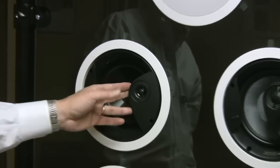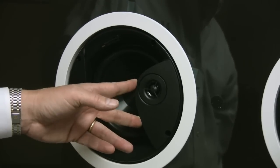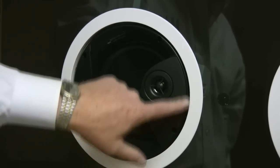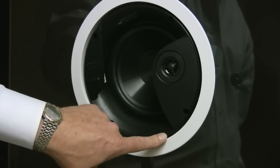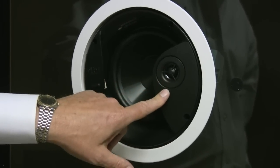By moving it off-axis, we get what we call asymmetrical diffraction, where the diffractive surface is not the same on both sides. And by doing that, you minimize the amount of sound that comes back and mixes with the tweeter in the front.